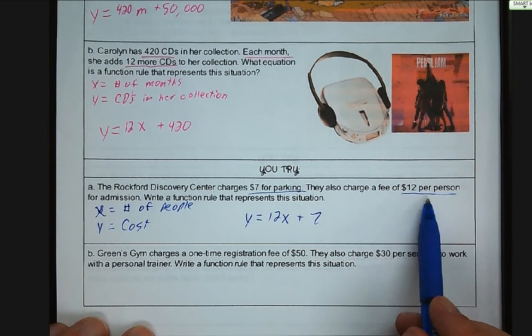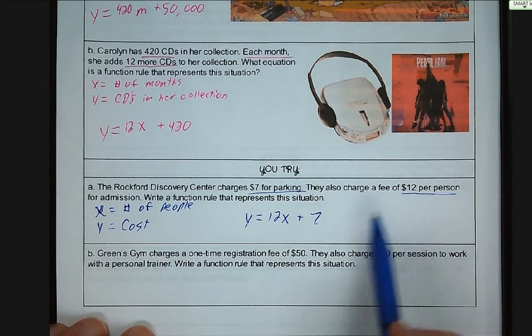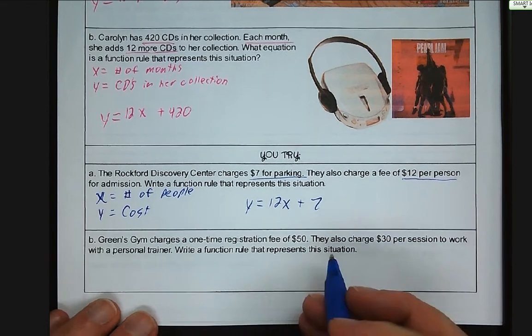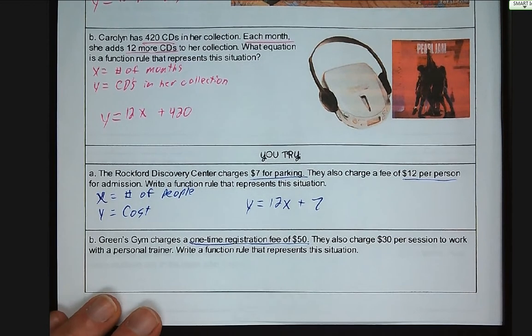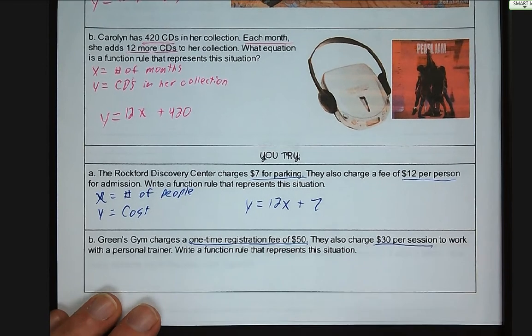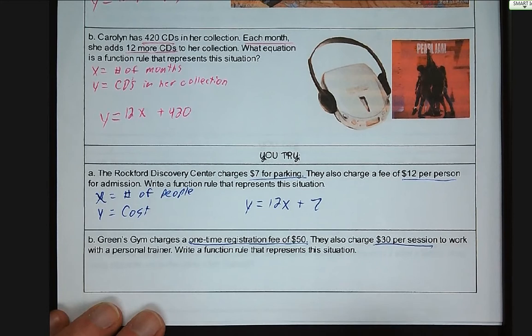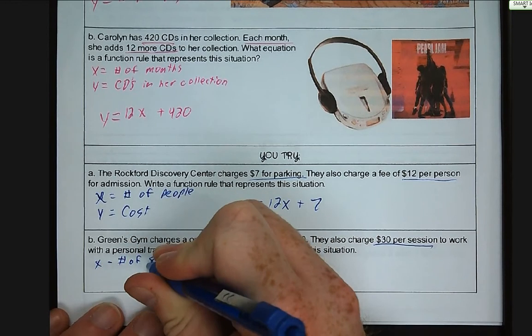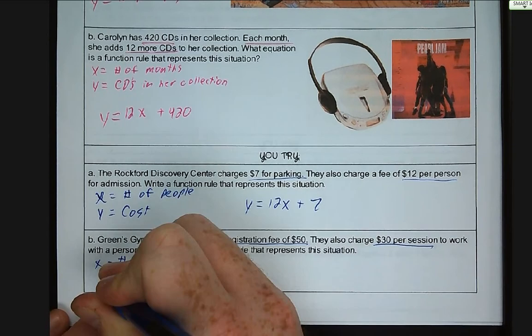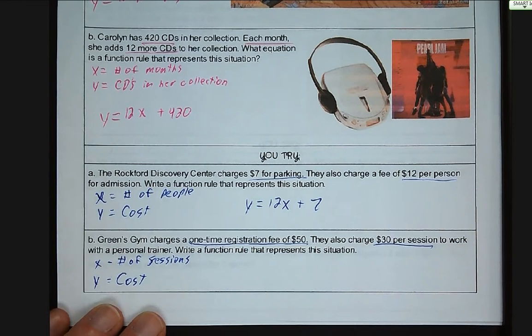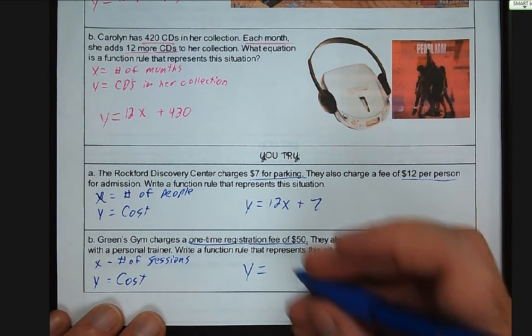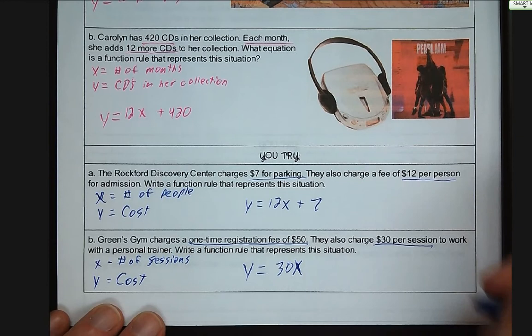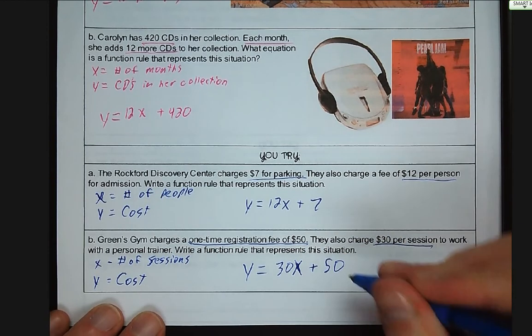Words that you're looking for for your rate of change, or anything where it says like per person, per month, per hour, those are generally going to be telling you that you're dealing with a rate of change. Green's Gym charges a one-time registration fee of $50. They also charge $30 per session to work with a personal trainer. Write a function rule that represents this situation. X is number of sessions, Y is cost. So our cost is equal to $30 per session times the number of sessions, x, plus $50 for the registration fee.